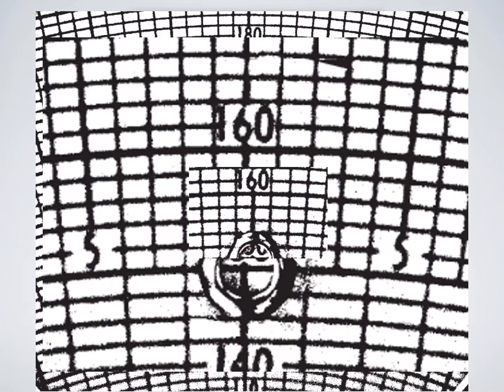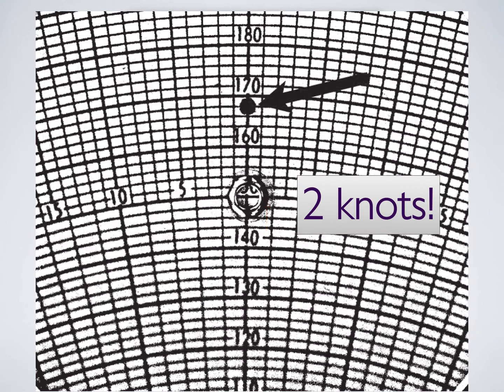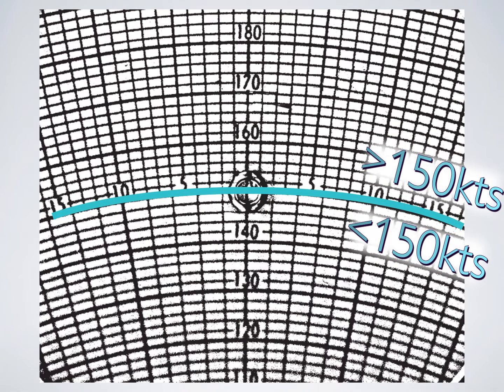The lines, at least the ones going horizontal, each measure 2 knots of wind speed. Wind correction angles are measured outwards from the true index center line, and most of the time each line represents 1 degree.